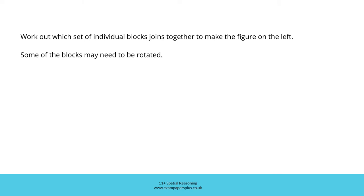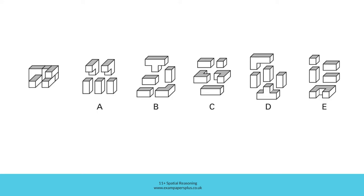Work out which set of individual blocks joins together to make the figure on the left. Some of the blocks may need to be rotated. In order to answer this question, we're going to consider this figure and think about how it may have been constructed. The right combination of blocks to create the figure will be represented by only one of these five answer options. Let's take a closer look at the figure and think about how it's been constructed.